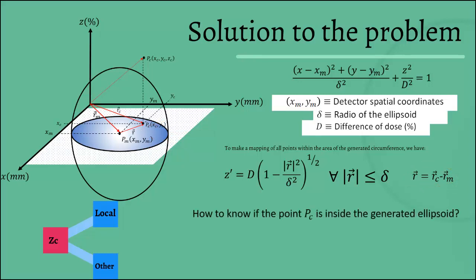Now we ask ourselves, how do we know that the coordinate point PC is inside of the volume enclosed by our generated revolution ellipsoid? PC will be within the enclosed volume by that surface only if the absolute value of ZC is less than or equal to the absolute value of Z prime. For every absolute value of R less than or equal to delta.